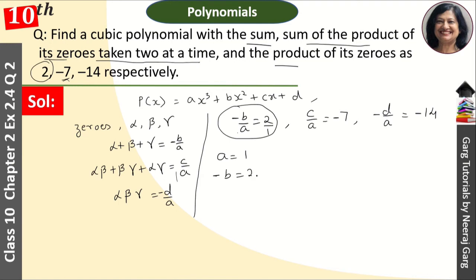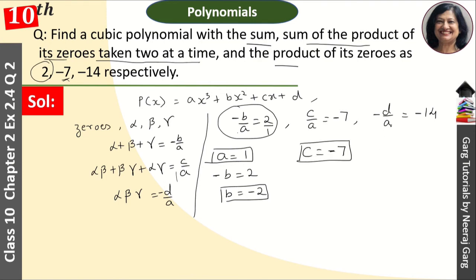b is equal to kya aa gaya, minus 2. Theek hai. Aur humein minus d is equal to minus 14 aa gaya. Matlab d is equal to aa gaya 14. Theek hai. Aur ab humein a, b, c, d saari values pata chal gayi.